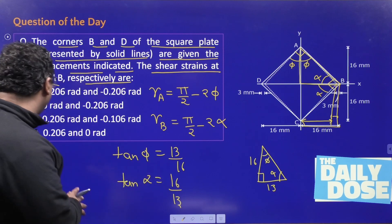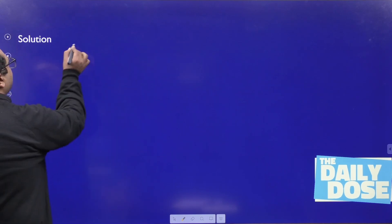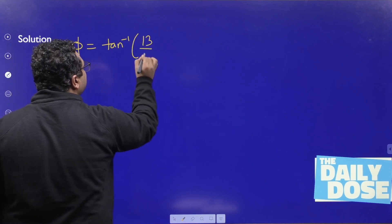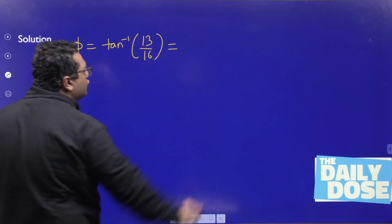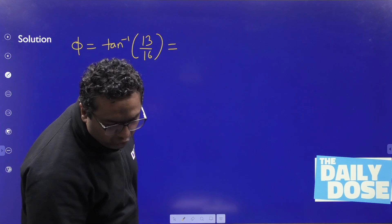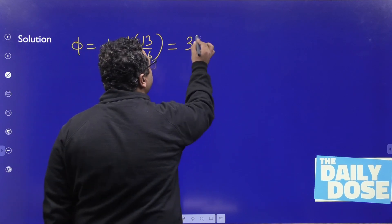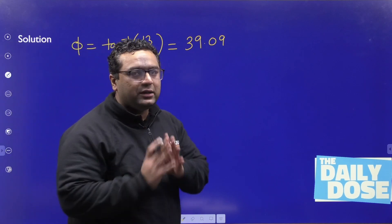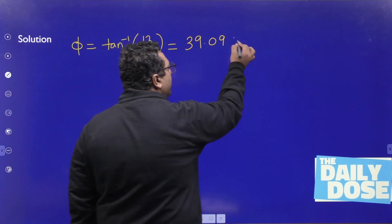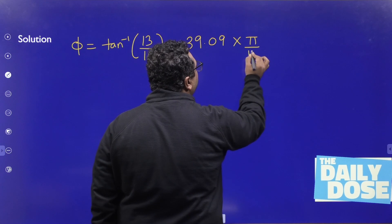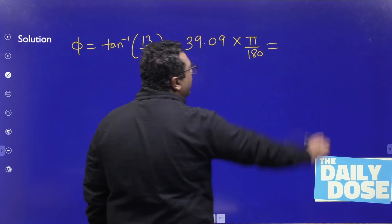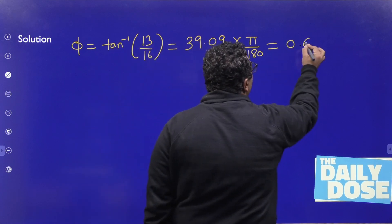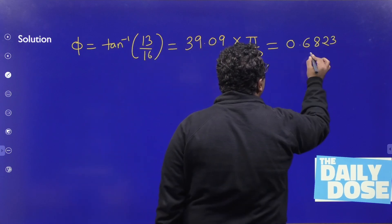Calculating phi: phi = tan⁻¹(13/16). After solving, you get phi = 39.09 degrees. Since we need the angle in radians, we multiply by π/180, giving phi = 0.6823 radians.